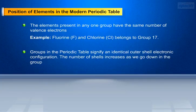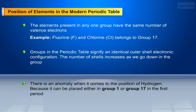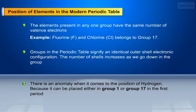The number of shells increases as we go down in the group. There is an anomaly when it comes to the position of hydrogen, because it can be placed either in group 1 or group 17 in the first period. Let's discuss in detail with an example for understanding the position of elements into groups and periods in the periodic table.